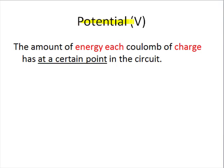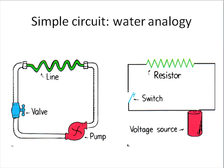The potential at a particular point in an electric circuit means the amount of energy per coulomb of charge at that point. Let's imagine we have a water circuit. We could look at one point in the water circuit and somehow measure how much pressure there is at that point.